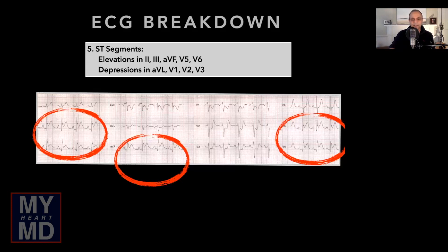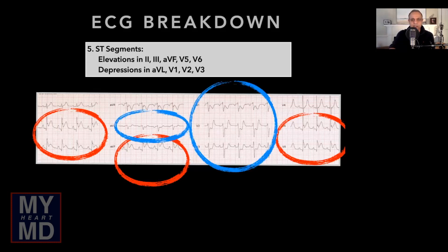Looking at the ST segments: there are clearly elevations in the inferior leads — II, III, and aVF — along with elevations in the precordial leads V5 and V6. There are reciprocal depressions in aVL and all of the anterior precordial leads. That right there has a regional pattern to it, and that should be extremely alarming.